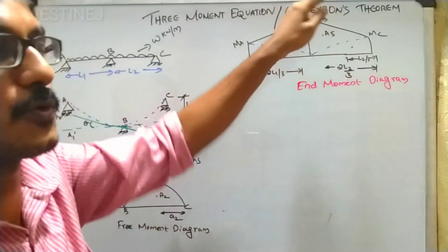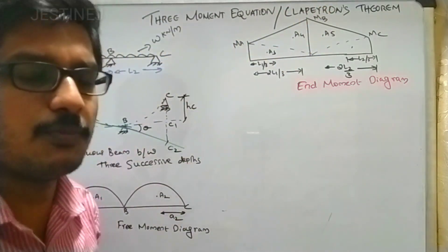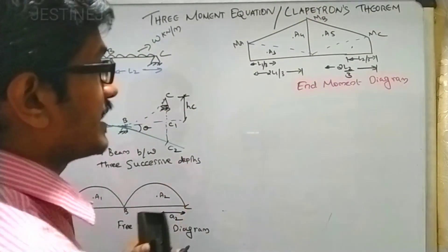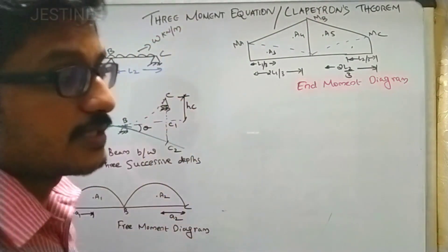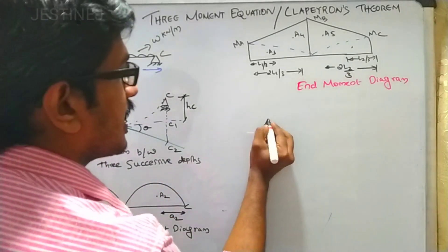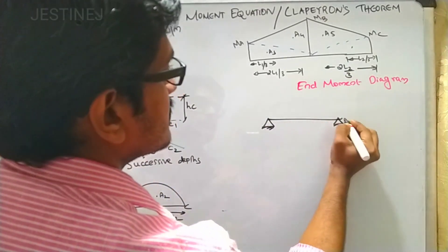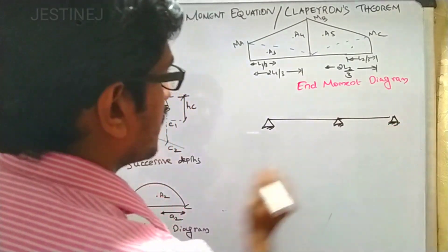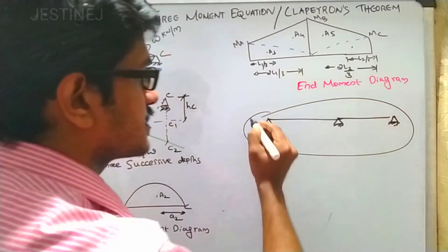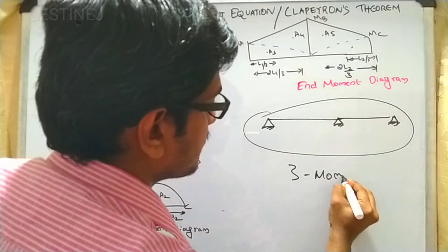We will now move on to our topic: the three moment equation, also called Clapeyron's theorem. This three moment equation can only be used in the case of a continuous beam with three supports — that is why it is called the three moment equation.